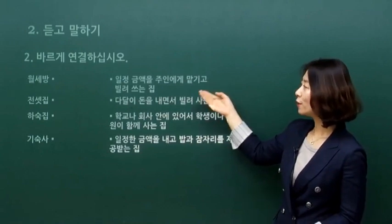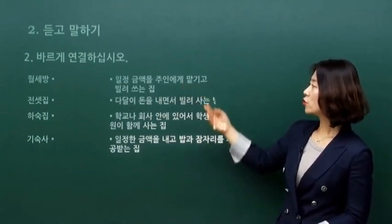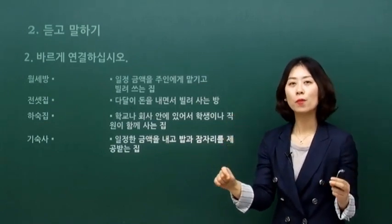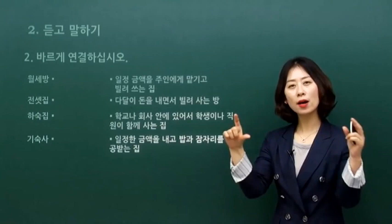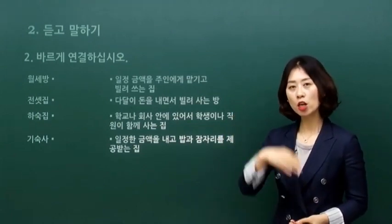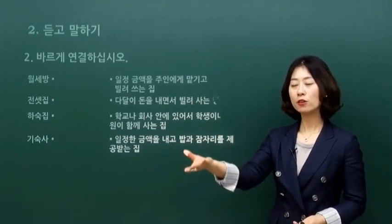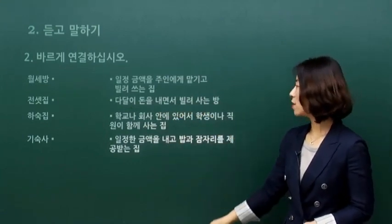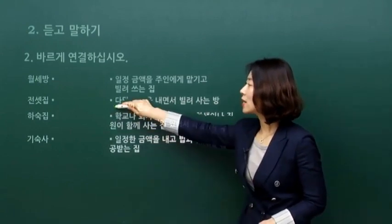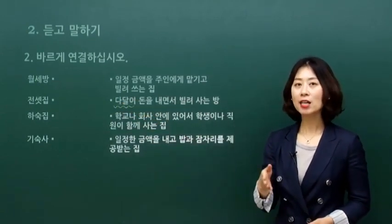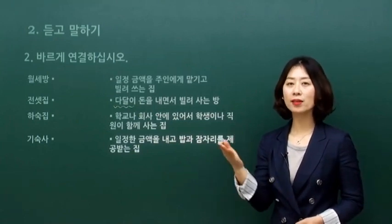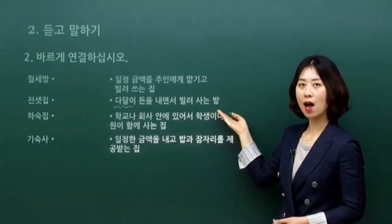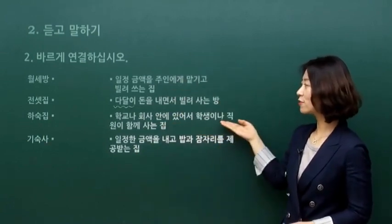설명을 잠깐 볼까요? 첫 번째, 일정 금액을 주인에게 맡기고 빌려 쓰는 것. 일정 금액은 정해진 금액, 예를 들어 천만 원, 1억 이렇게 정해진 금액을 주인에게 맡기고 집을 빌려서 쓰는 거예요. 두 번째, 다달이 돈을 내면서 빌려 사는 방. 여기서 다달이는 매달, 매월 이런 뜻이네요. 매월 돈을 내면서 빌려서 사는 방이 뭔지 생각해 보세요.